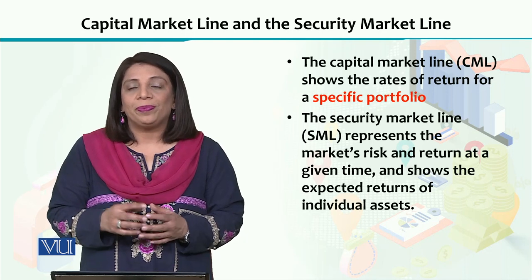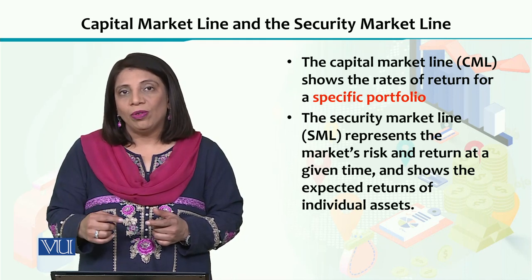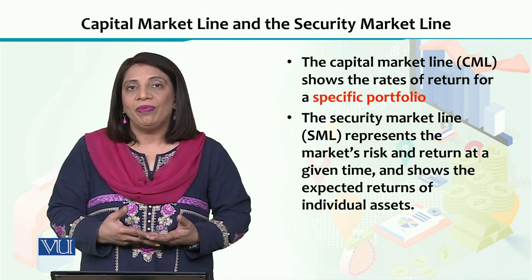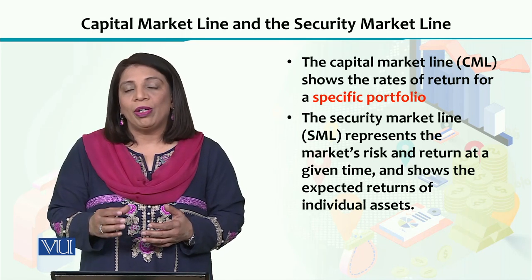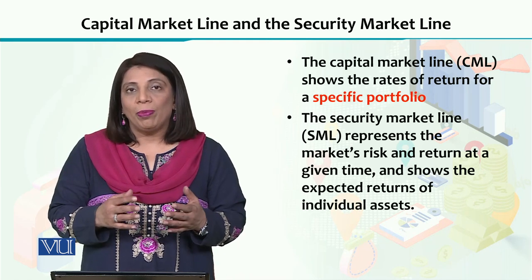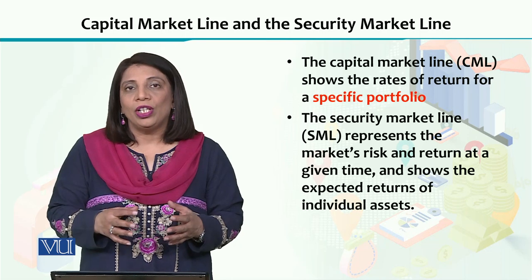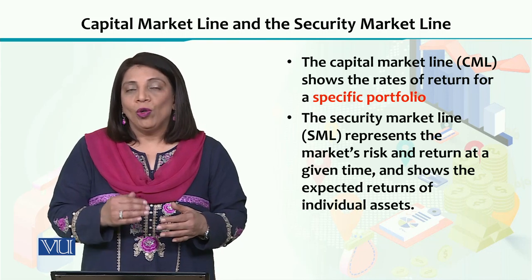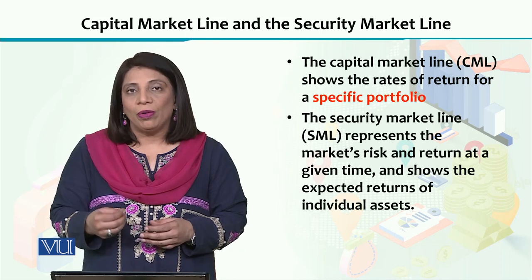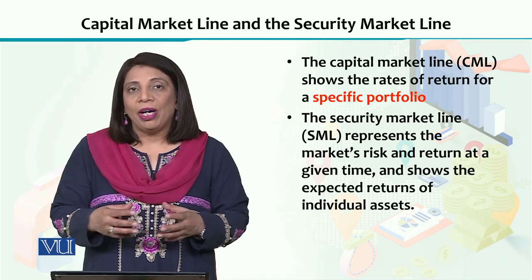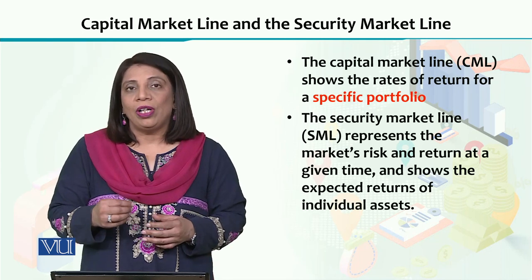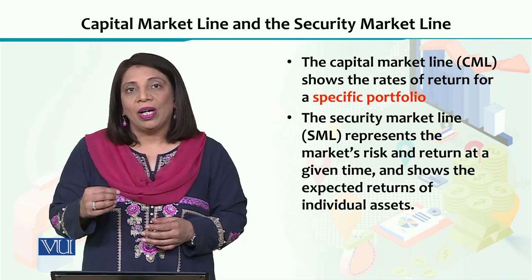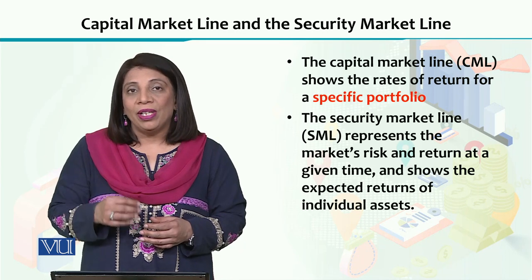We discussed in the previous sections that we have a capital allocation line, which is explained by different combinations of investment possible for any investor with any given amount of money. This is different from a portfolio made of risk-free assets. For all those combinations, we call the line a capital allocation line, and the optimal combinations on that line we call the capital market line.